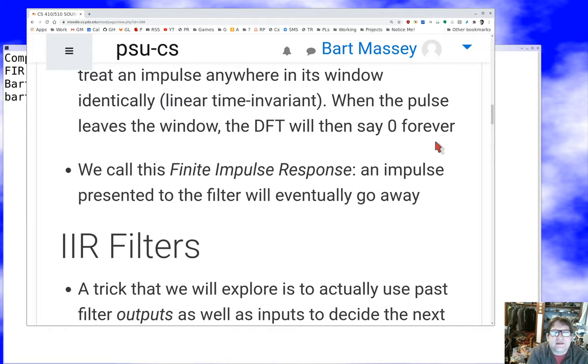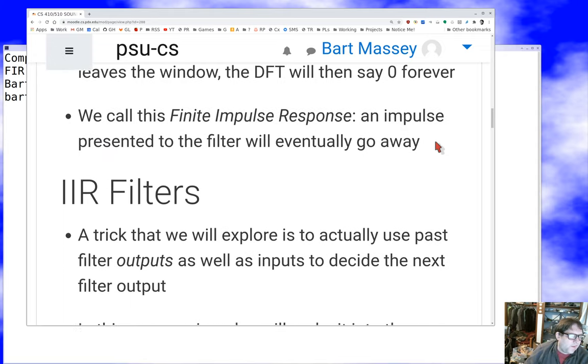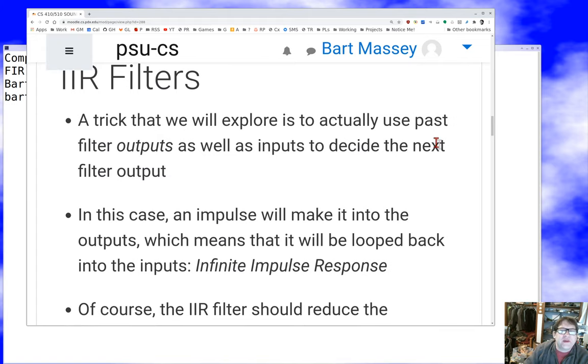After a while, the impulse will be gone and all that will be left is the zeros. That's what finite impulse response means: any impulse presented to the filter will eventually go away. There's also such a thing as infinite impulse response filters.